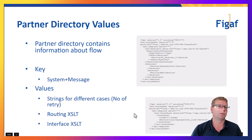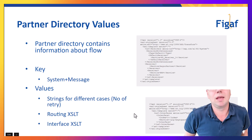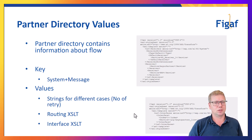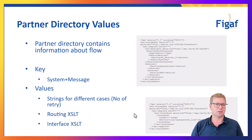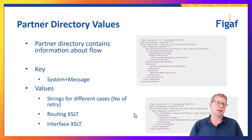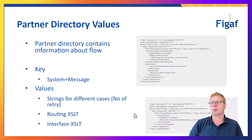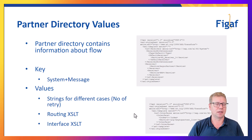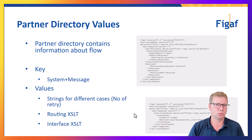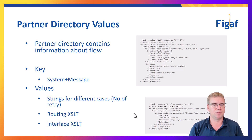All of this is configured using the Partner Directory. The idea is you use a key that is the system plus a message type, and then you have options to define different criteria - either string parameters or a routing XSLT. In most cases you would have XSLTs for routing, for receivers, and for the interfaces.